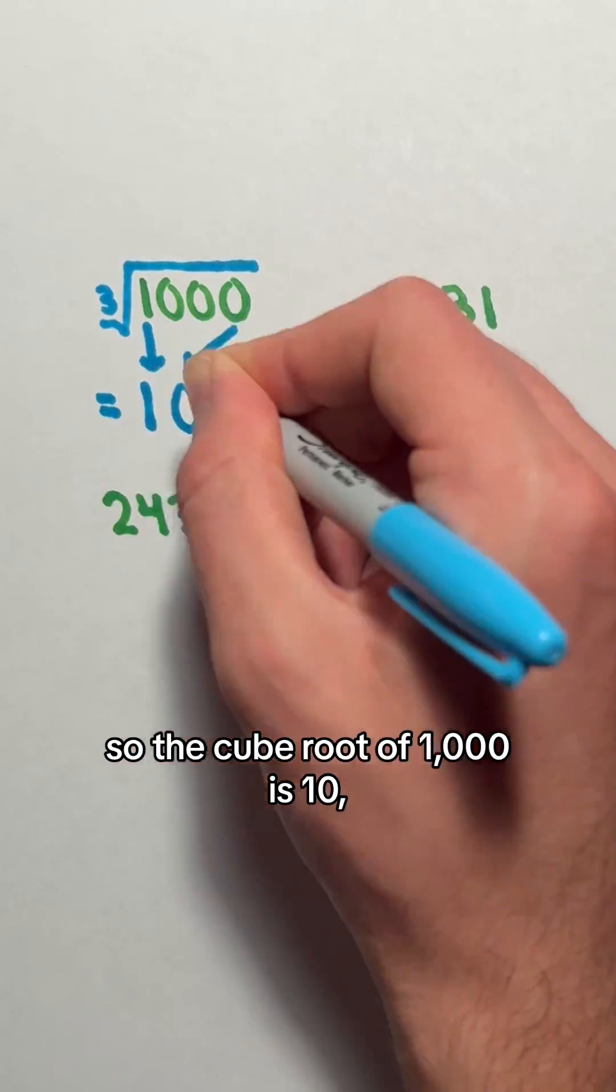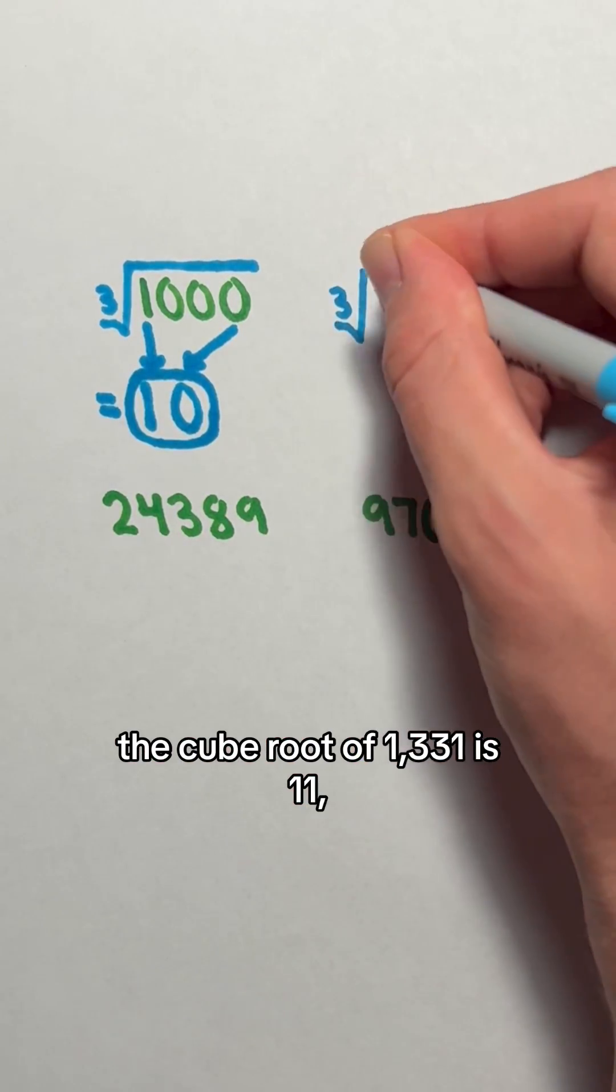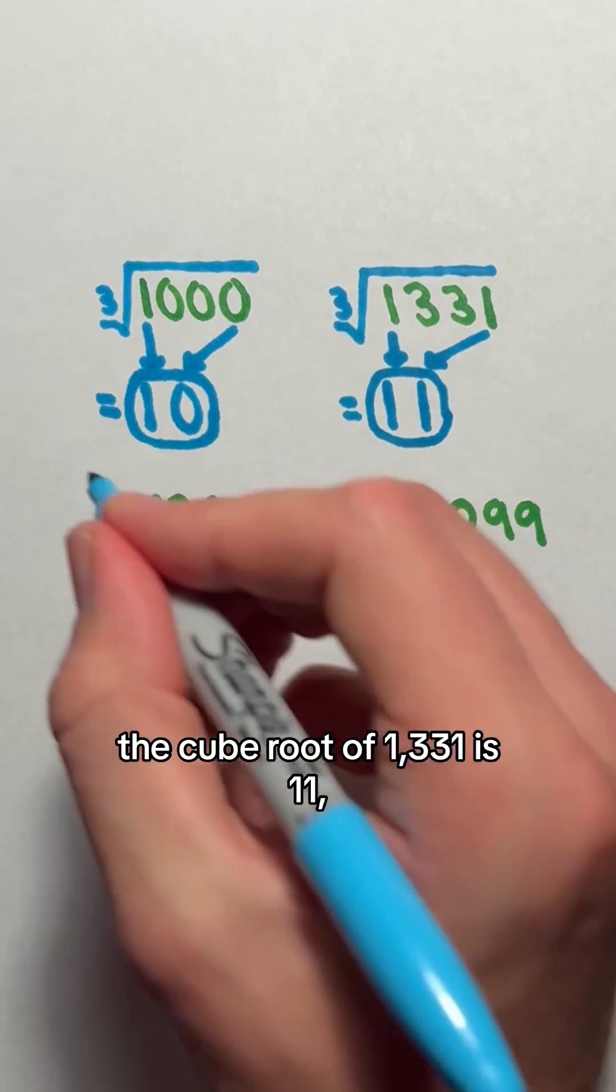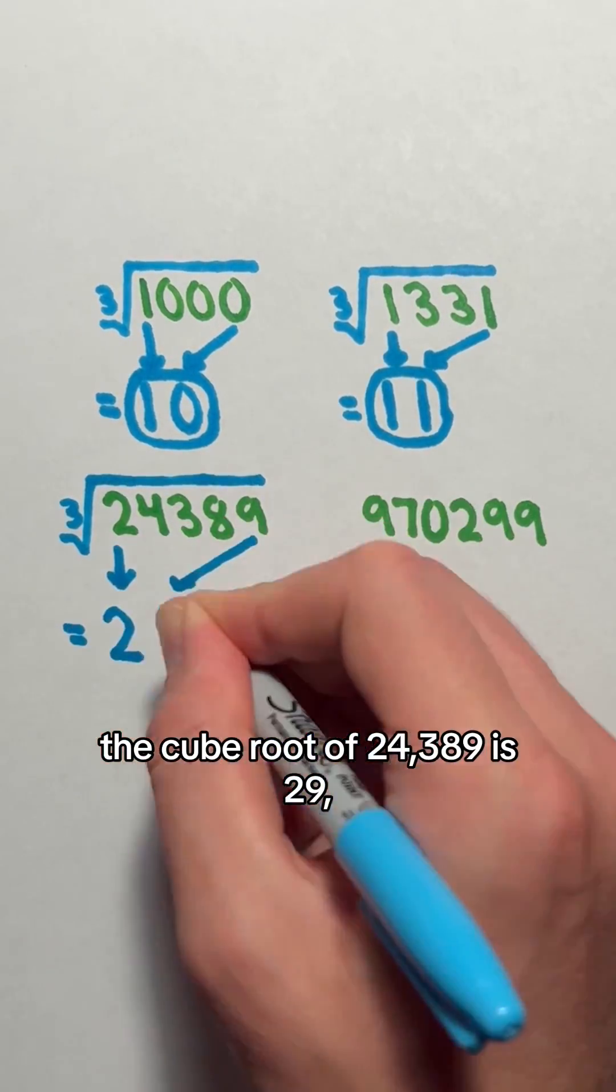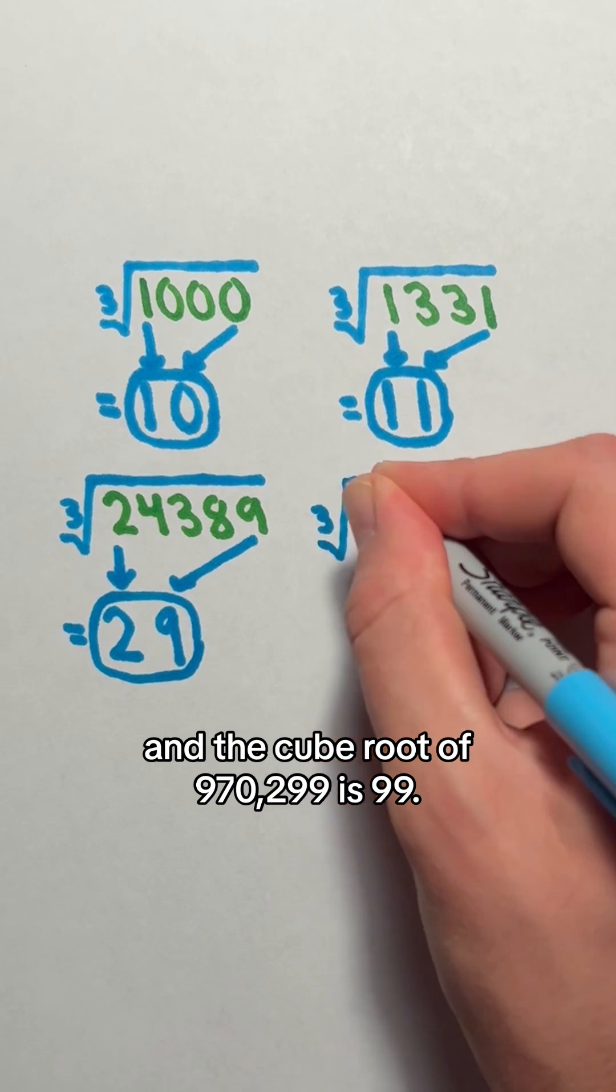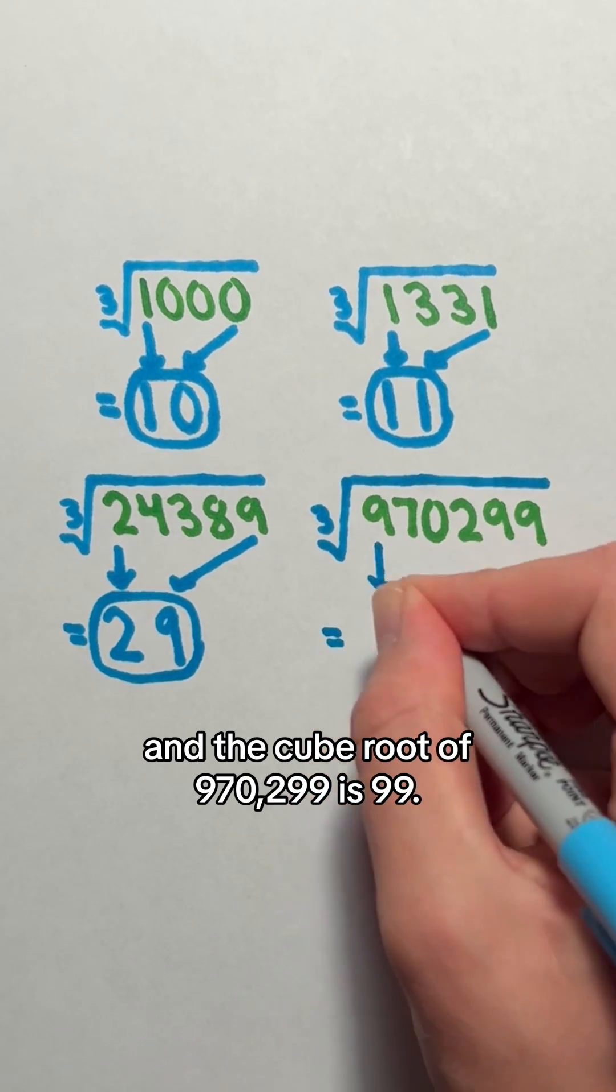So, the cube root of 1000 is 10, the cube root of 1331 is 11, the cube root of 24,389 is 29, and the cube root of 970,299 is 99.